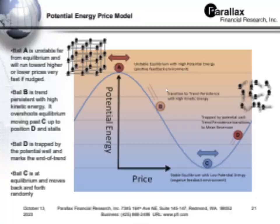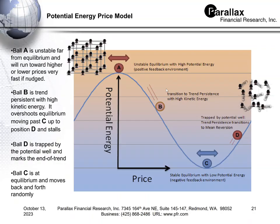So how do we get there? Being physicists, we tend to create potential energy models. We're identifying four states of the market. The first is state A, where the market is in contention between supply and demand — supply wants to dump the security and demand wants to buy. At state A, there's a lot of potential energy for price movement, but the price hasn't moved yet.